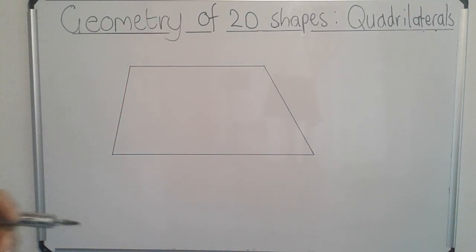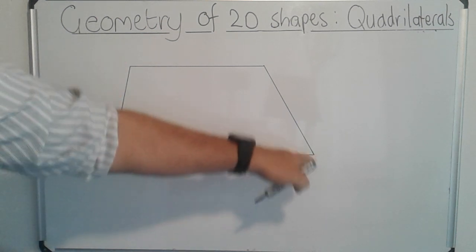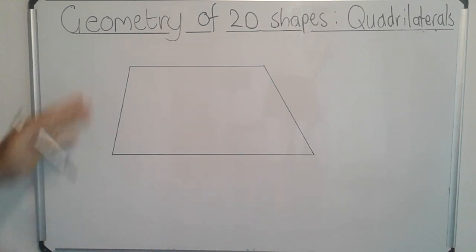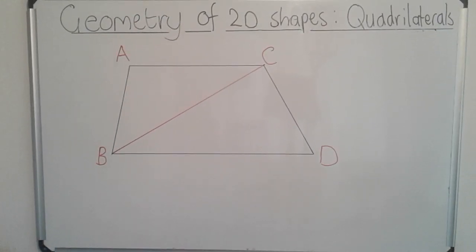First thing I'd like you to do is open to an empty page and draw a quadrilateral — any type of quadrilateral, so four lines that make up a 2D shape. Draw it about 10 centimeters by 10 centimeters big like I've done here. Pause the video and draw yourself a quadrilateral in your books.